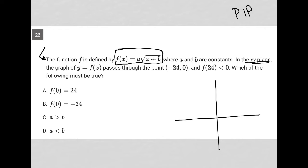Let's see, what do we know about this graph? We know that it passes through the point (-24, 0). So if this were negative 24, we'd have a point right there at (-24, 0). And we know that at f(24), it's less than zero. So if this were the point positive 24 here, we know that our graph here is going to be somewhere down in the negative portion here. So that's really all we know about our graph.